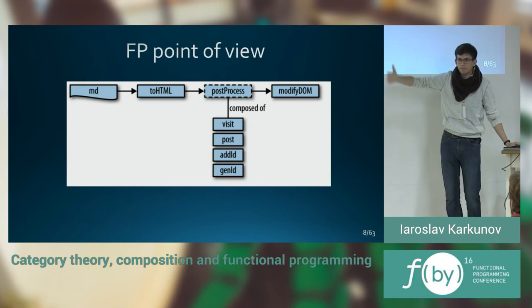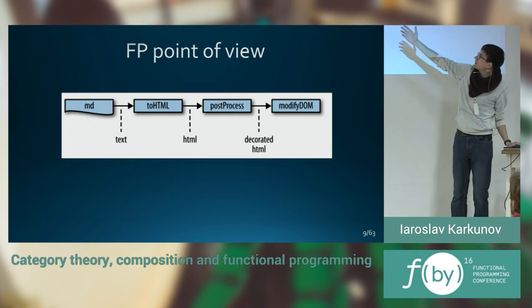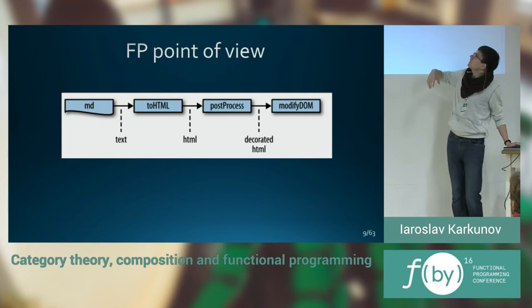It's kind of big pipelines. And now, those arrows are not actions. Now, objects are actions and arrows are types. Functional programming types. Some text, some HTML, some decorated HTML and so on.